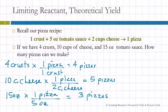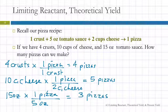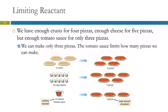So the people who said three were correct. As we're making pizzas — one pizza, two pizzas, three pizzas — we've used up all the sauce. Pizza making stops. You can't make any more. What happens to the extra crust and the extra cheese? They just sit there — they're not part of the pizza. Can we make four plus five plus three pizzas? No, that's silly. You can't just take those numbers and add them together because they each need the others.